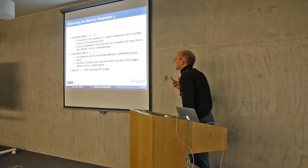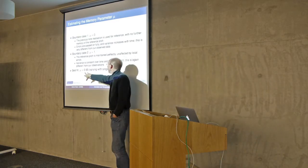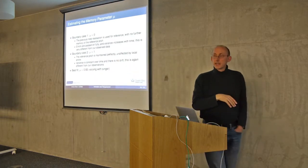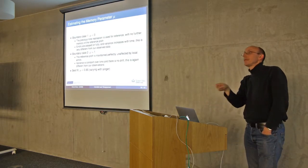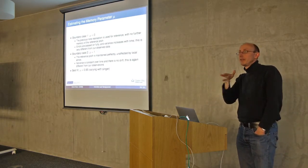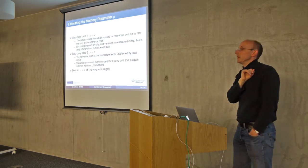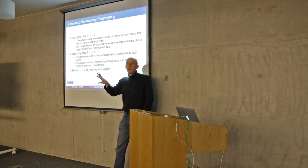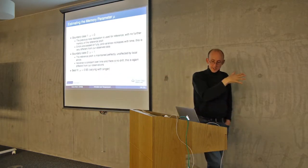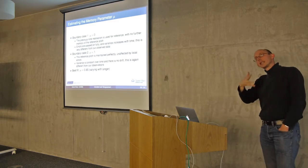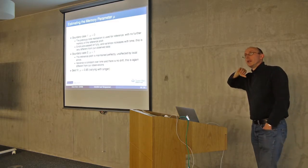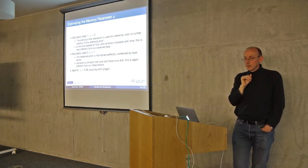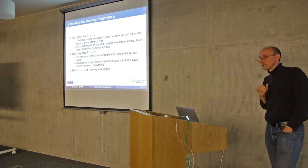What we found is that mu equals 0.85 was the best fit across the whole dataset. We could calculate different values of mu for different individuals — some people have stronger memory of the reference pitch, some have less. Values varied from about 0.65 to 0.9. The model's not perfect — the linear fit isn't fully plausible — but it's a rough approximation and a starting point.